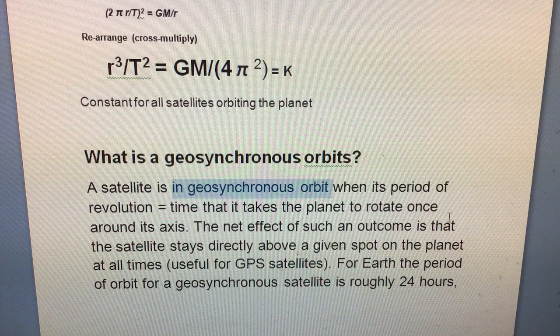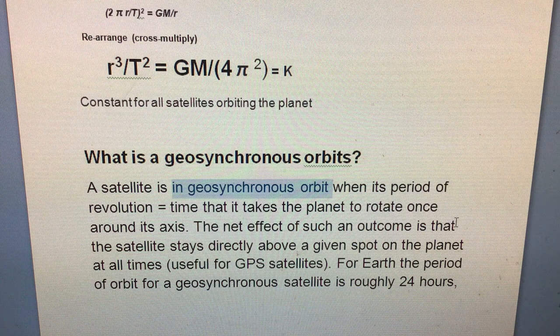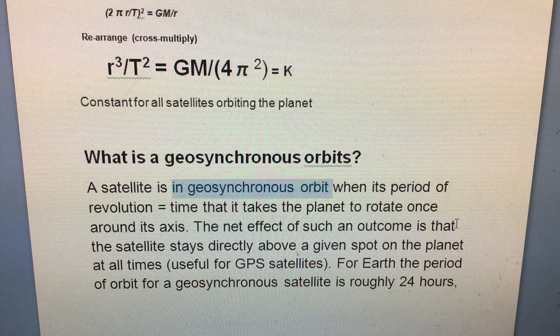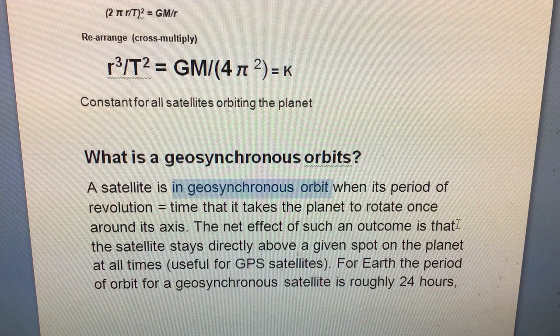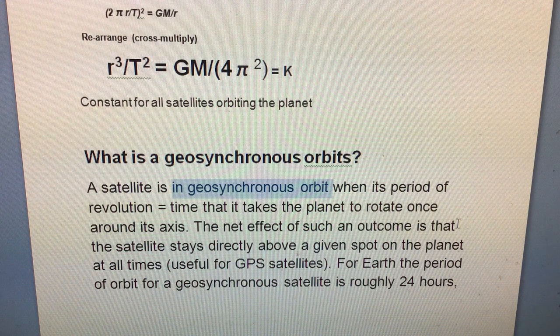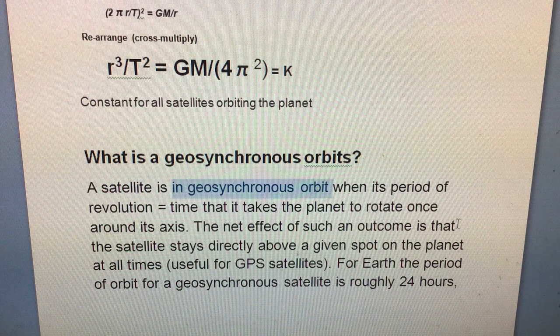So again, geosynchronous satellites are placed for Earth. They have roughly a time of orbit of 24 hours. They're quite high up - they're about six or seven Earth radii above the Earth's surface. So they have to be very, very high up, much higher than the International Space Station.